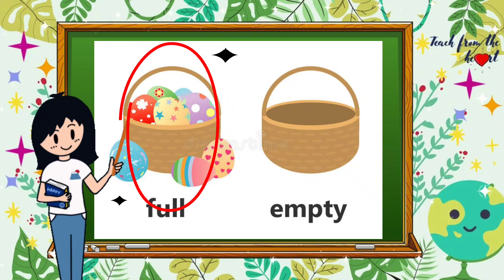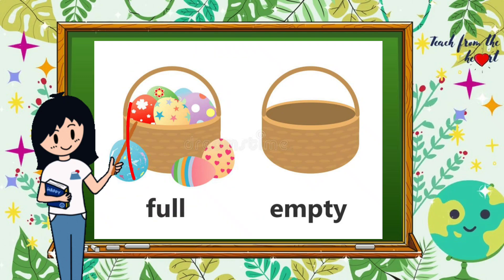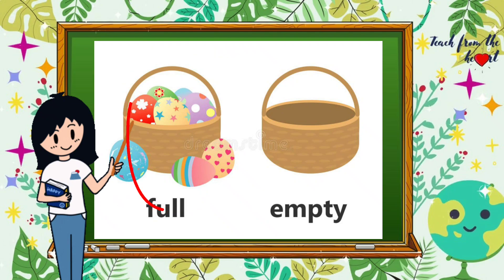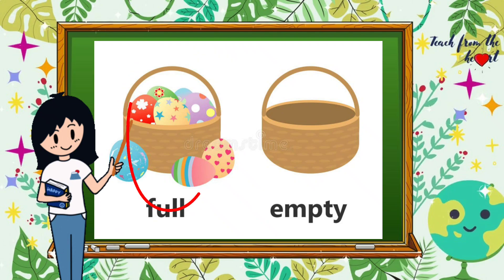Hey kids, just look at the picture. This basket is full — it's full with eggs. And that basket doesn't have eggs, it's empty. This basket is full.